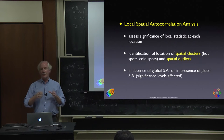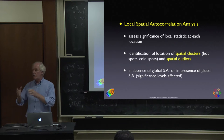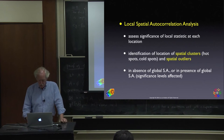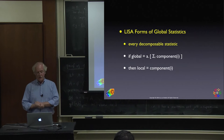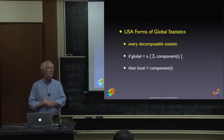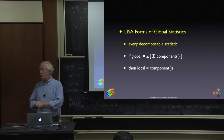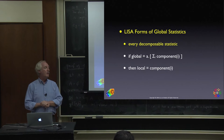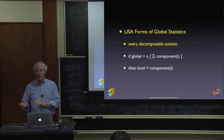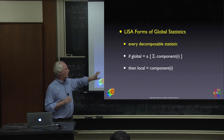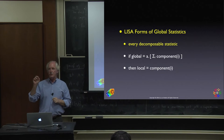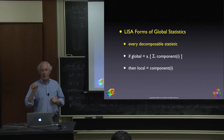In general, there are many different LISA statistics — every global statistic that is decomposable has a local counterpart. All the tests we've seen so far are double sums over i and j: Moran's I was a double sum, Geary's C was a double sum. If you can separate this out with a scaling factor and a sum of components specific to each location i, that component is the local statistic.